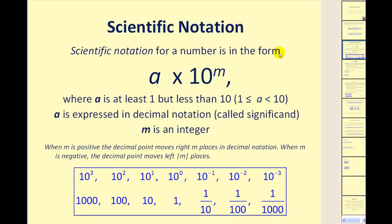Scientific notation for a number is in the form of a times 10 to the power of m, where a is a number in decimal form that is at least one but less than 10, and m, the power on 10, must be an integer. If m is positive, we'll be multiplying by numbers larger than one, so when we convert to decimal notation, the number will be larger than the value of a.